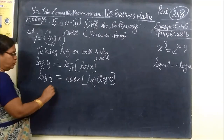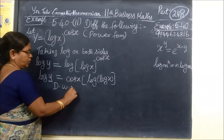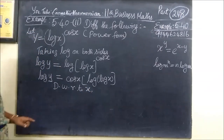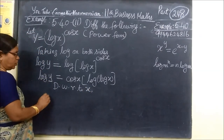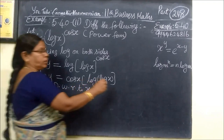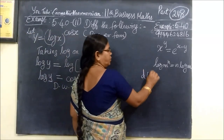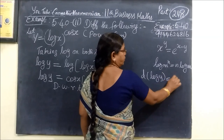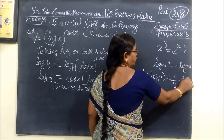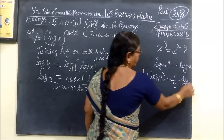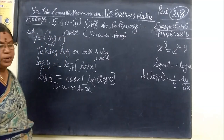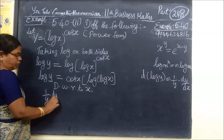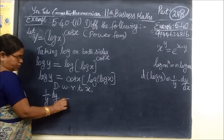Now we differentiate with respect to x. The differentiation of log y is equal to 1 by y into dy by dx. So 1 by y into dy by dx — approximately required.